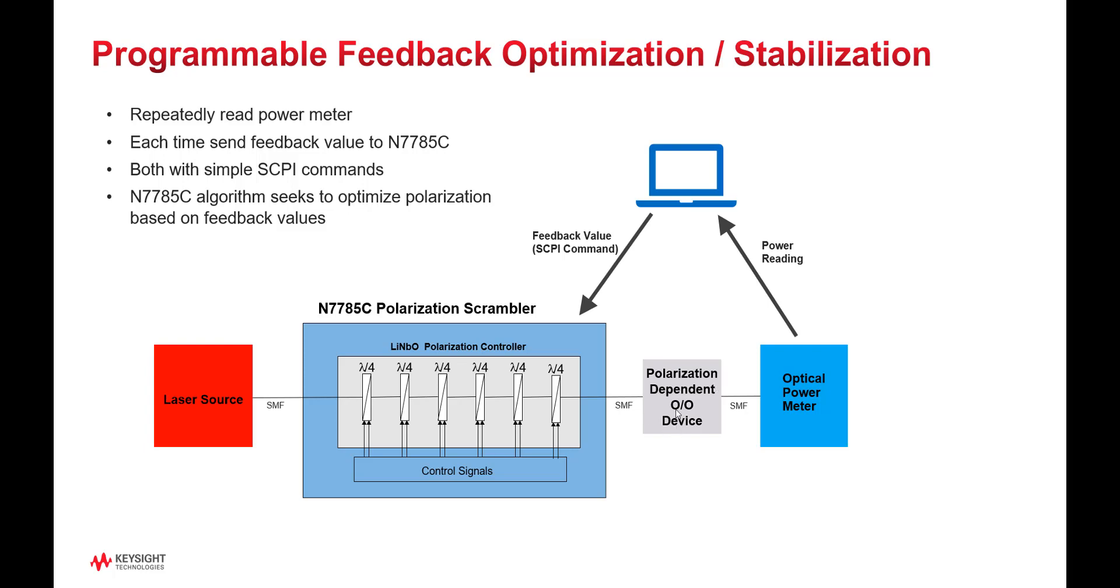Feedback for an optical-to-optical device would come from an optical power measurement of the output power from the device sent to the PC and the feedback value calculated from that and sent to the polarization scrambler. This is repeated over and over until the maximum power, or it could be the minimum power, it can be set up that way.